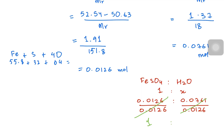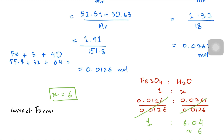So x is equal to 6, and the correct formula for the hydrated salt is FeSO4·6H2O — iron(II) sulfate hexahydrate. I hope you are clear with the experiment. In the next video we'll do an actual past paper question. Stay tuned!